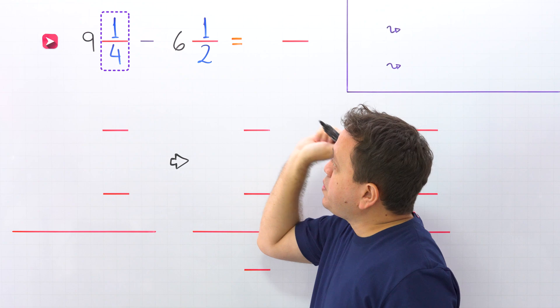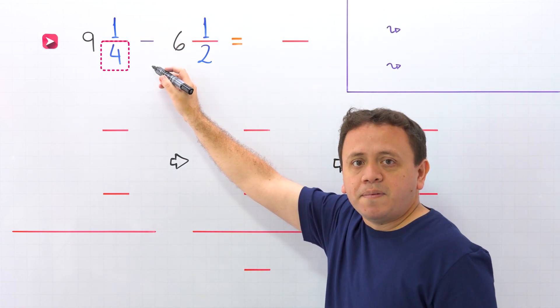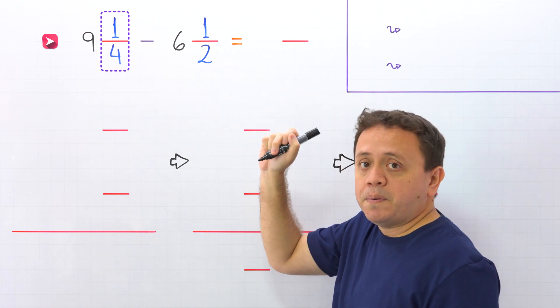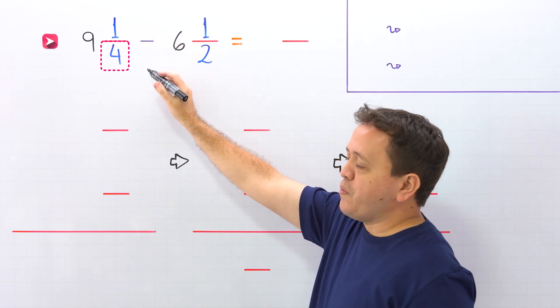Also, a proper fraction is a fraction where the numerator, the top number, is less than the denominator, the bottom number. 1 fourth is a proper fraction, given that the numerator 1 is less than the denominator 4. Nice!